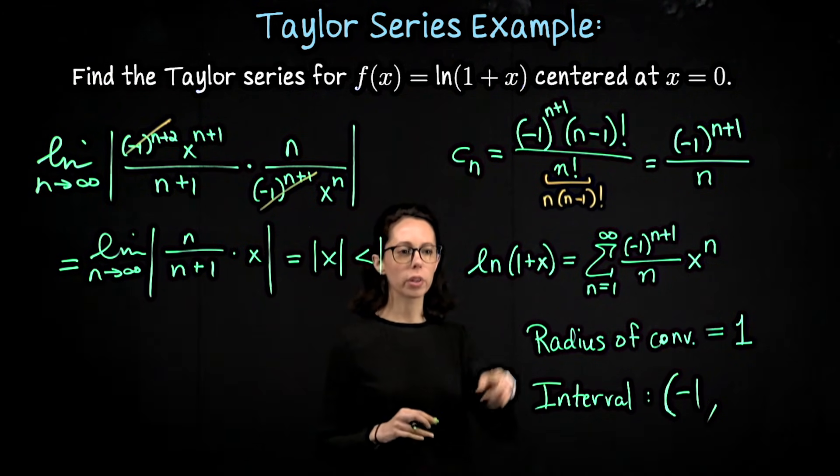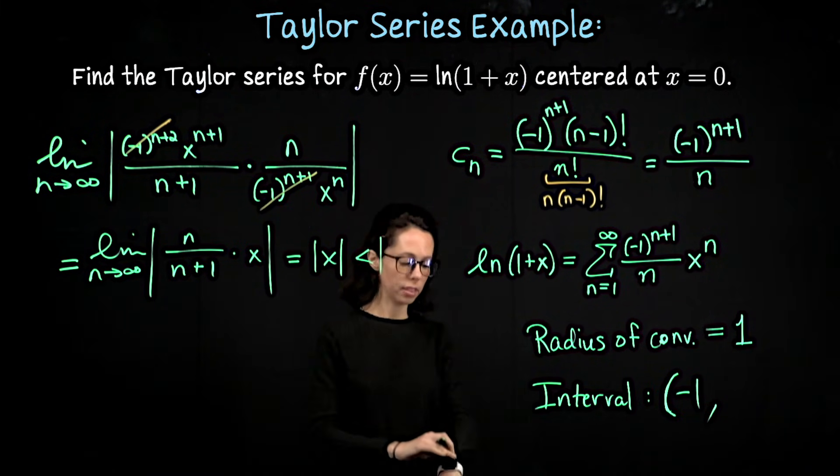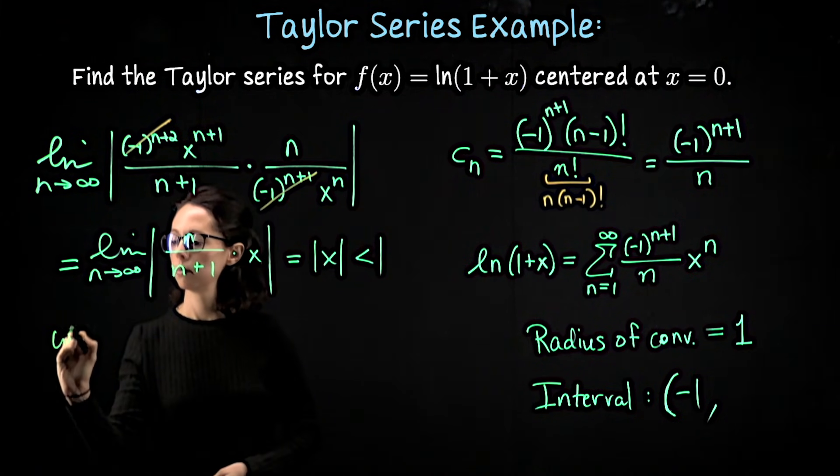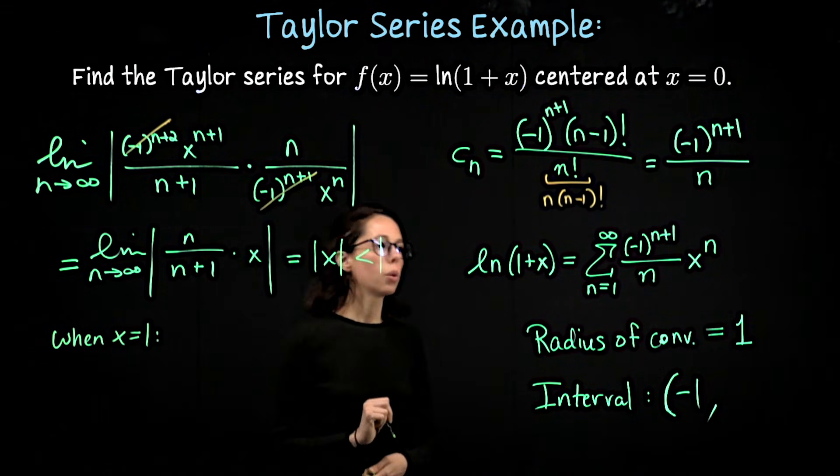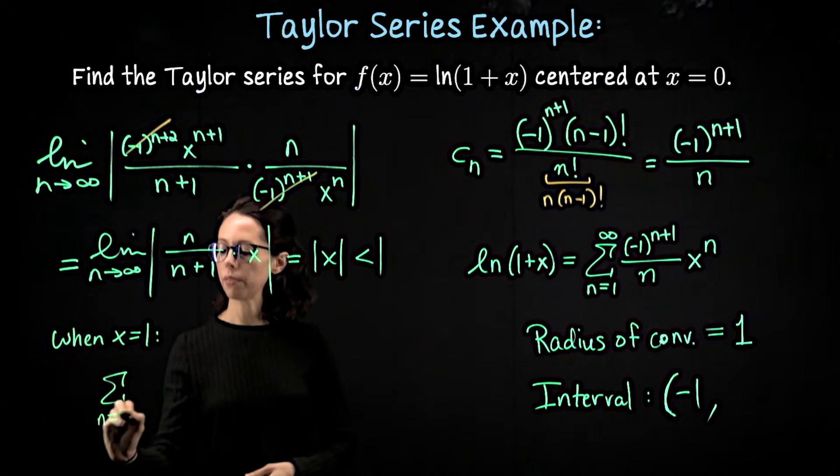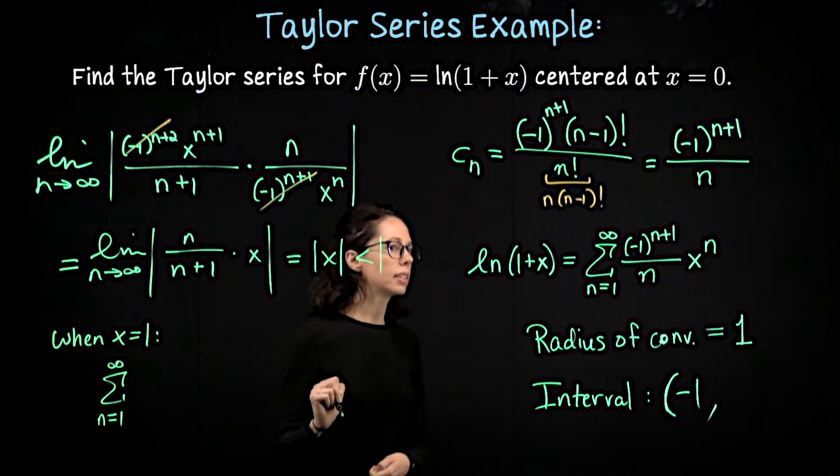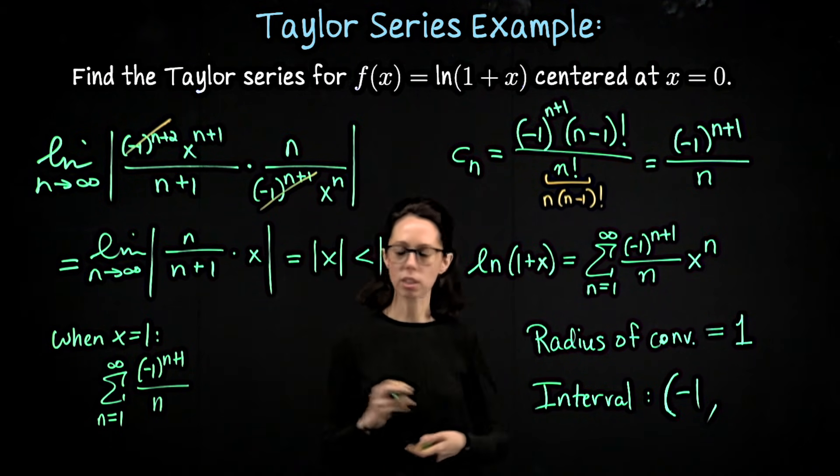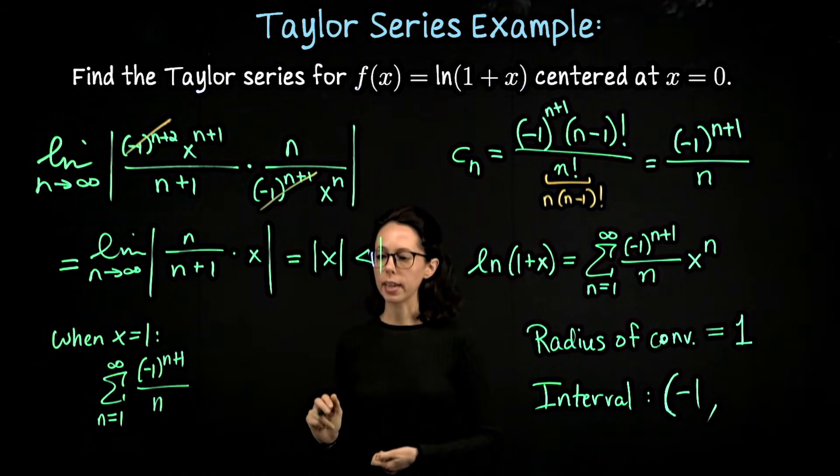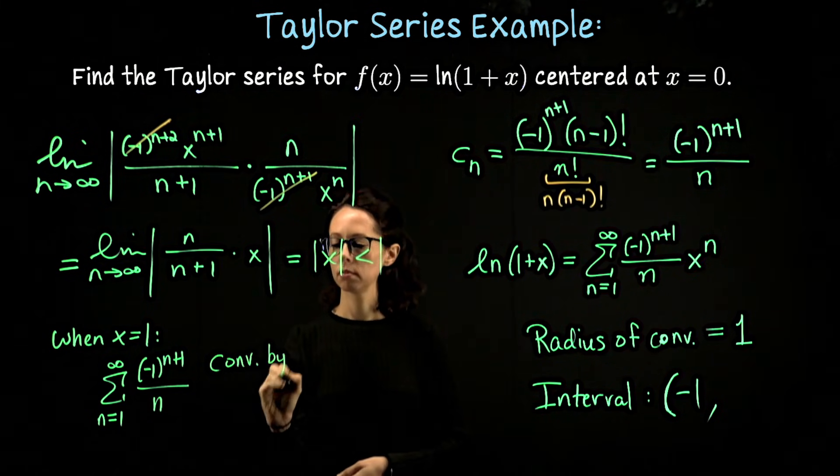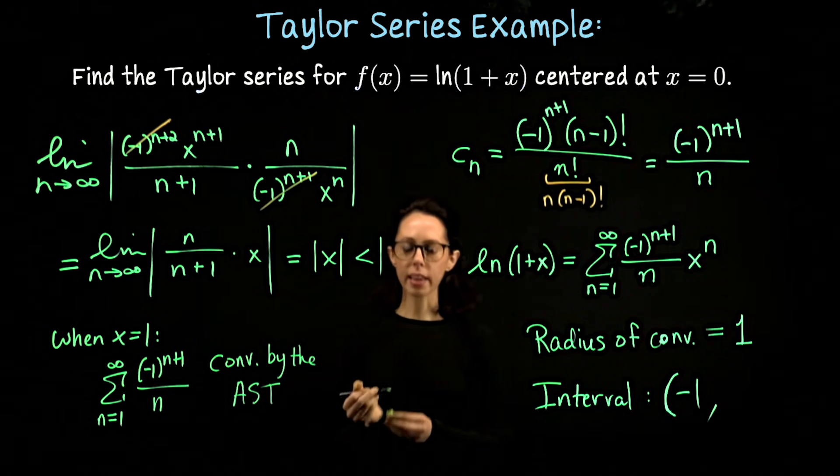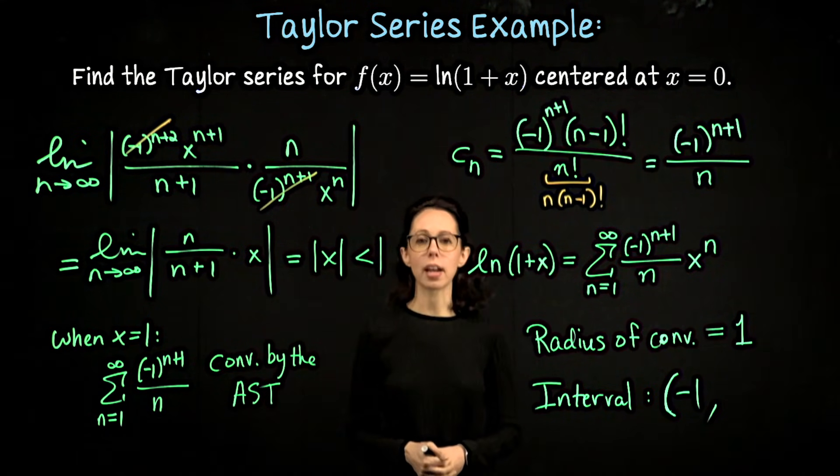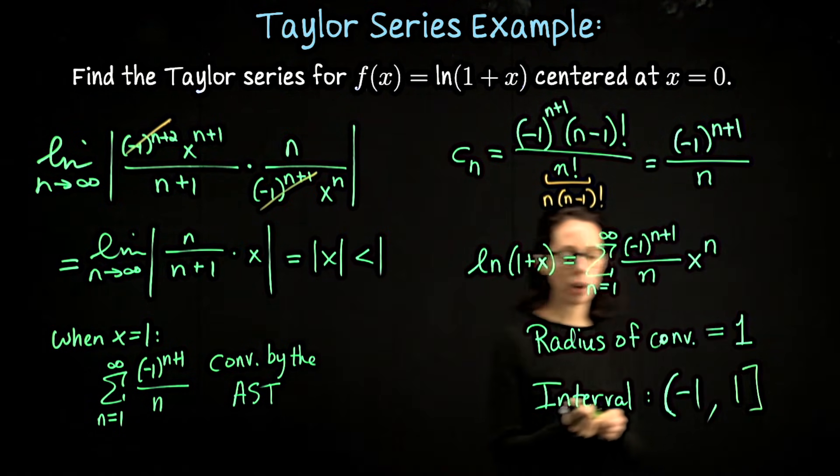For x equals 1, however, we're looking at natural log of 2. That's in the domain of natural log. So let's check what this series looks like when x equals 1. We have the sum from n equals 1 to infinity of (-1)^(n+1) over n times 1 to the n. So that's just going to be 1. This converges by the alternating series test. It's like a version of the alternating harmonic series. And in fact, this alternating harmonic series expression here adds up to the natural log of 2. So we do have convergence at the right endpoint when x equals 1.